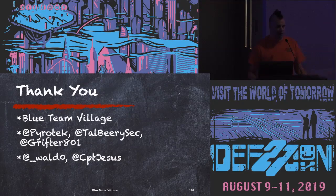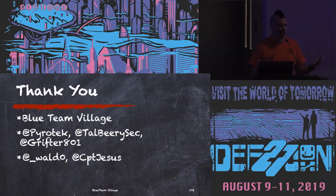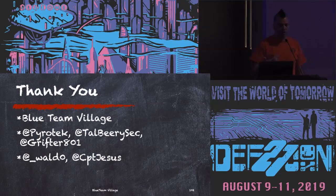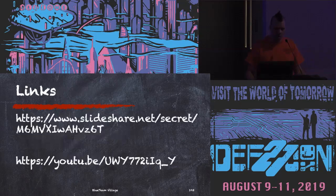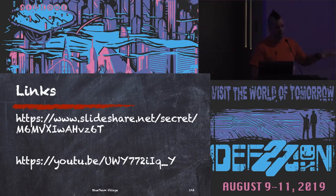Here are the key takeaways: defenders can think in graphs using tools like Bloodhound; Cypher is a very flexible language and you can do a lot if you put the effort in; it's important to test the real impact of a remediation before sending it to your sysadmins — otherwise they'll lose faith in Bloodhound, in your process, and in you. Not all queries are worth automating. I want to give a big thank you to the Blue Team Village for having me, and to Pyrotech, Talberry, and Grifter. Grifter told me last year in Toronto that if you have something to share with the community, don't be shy — do CFPs, and you might get accepted. Here's the link to the whole slide deck and the B-Side Charm version of this talk for a more in-depth GUI tour.